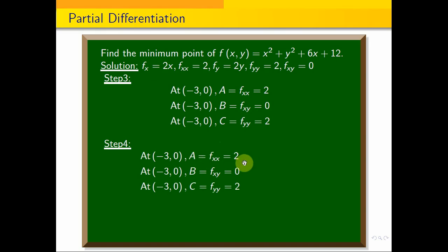At (-3, 0), A = fₓₓ = 2, B = fₓᵧ = 0, C = fᵧᵧ = 2. We calculate AC - B².